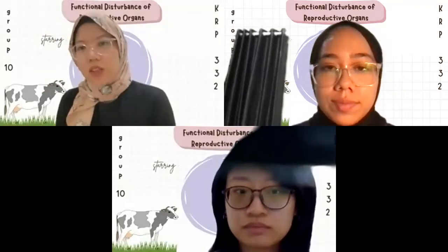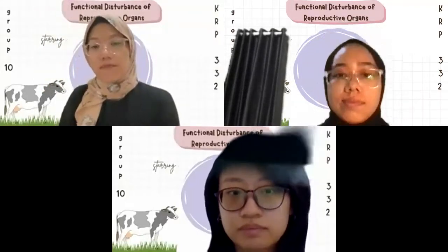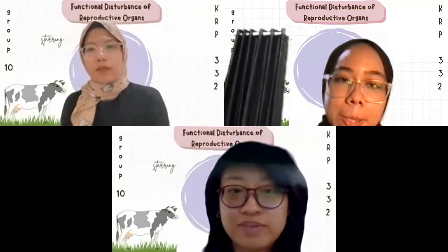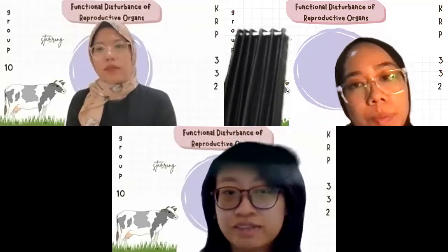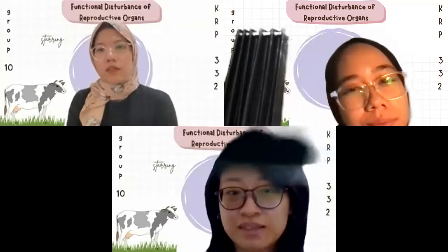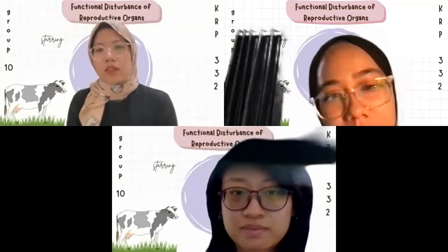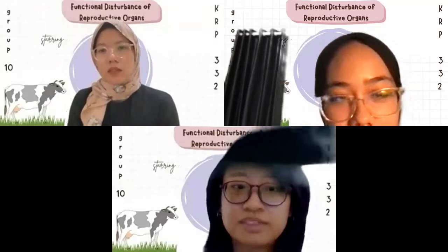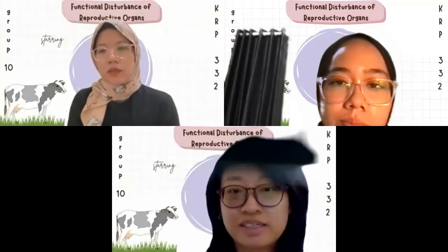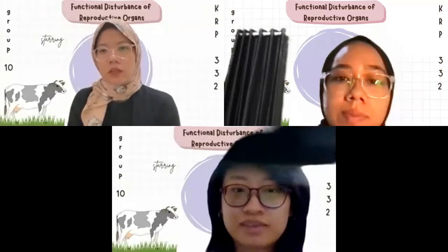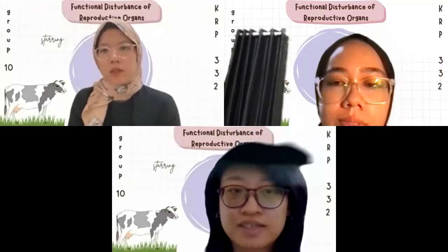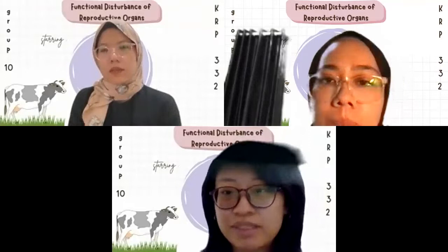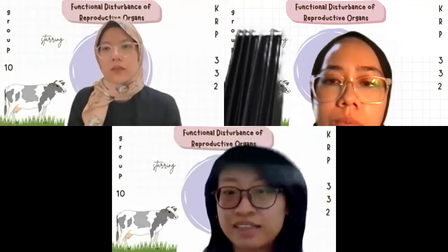Shall we move to the next reproductive disturbance — nymphomania first? Now I'll continue the discussion with nymphomania, also known as cystic ovarian degeneration, which is a form of sterility in cows. Is it true that these cases are common in dairy cows? Yes. Nymphomania is most common in cows of dairy breeds, and a considerable number of cows in their best production age are culled because of this. This condition has been rising, possibly associated with increased milk production and artificial insemination.